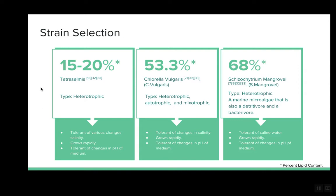The Tetraselmis strain has a lower lipid content; however, it is a well-documented robust strain that has high lipid productivity. The Chlorella vulgaris strain is a robust strain that has high lipid content and was shown to have the ability to be grown in light, dark, or mixed-condition systems. Lastly, we have the Schizochytrium mangrovei strain — this robust bacterivore strain is shown to have the highest lipid content and thrives in dark conditions.